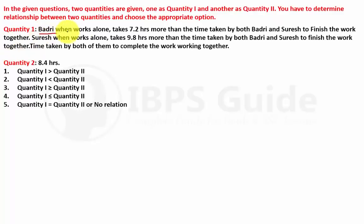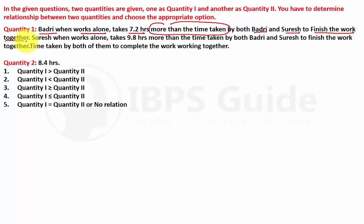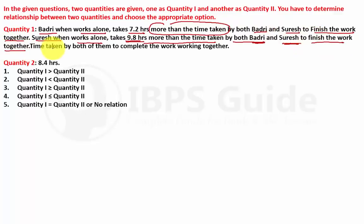Question 3: Badri, when working alone, takes 7.2 hours more than the time taken by Badri and Suresh working together. Suresh, when working alone, takes 9.8 hours more than the time taken by both together. Find the time taken by both of them working together. There is a simple direct formula for this pattern of time and work.